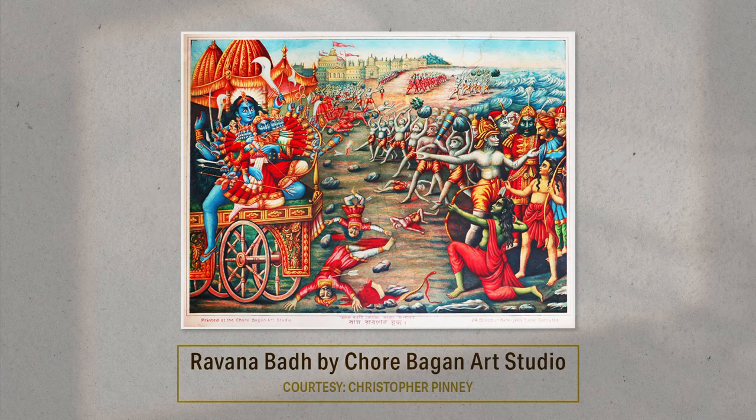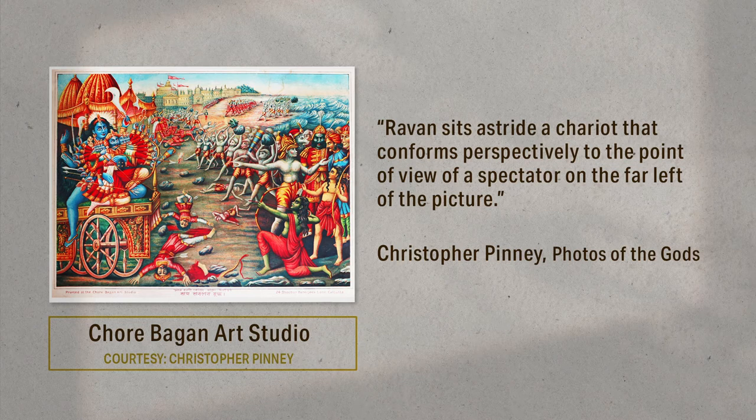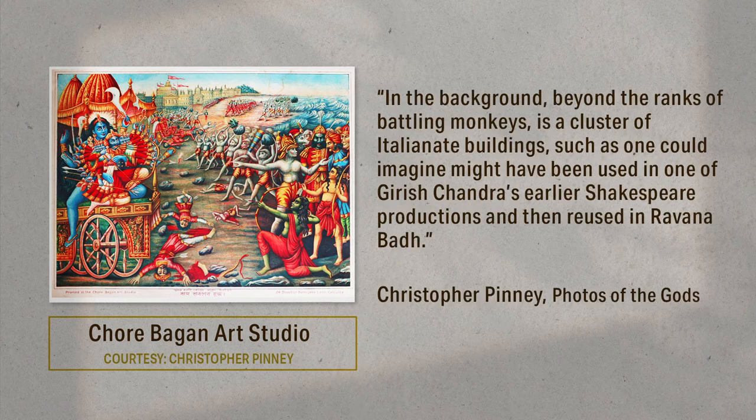The final battle scene between Ram and Ravan formed the climax of the play Ravan Bad. This same scene was depicted in a print by the Chore Bagan Art Studio, another of Calcutta's early printing presses. Look carefully at the visual language of this print — does it not look like we are viewing a scene on stage, seated in the corner of a theatre? The background of the image too looks very much like a backdrop used in a play. Pinney came to the conclusion that the artist of this print had probably attended a performance of the play, and inspired by it, created a chromolithograph around the same theme. Not only the content, but also the style of the painting was influenced by what he may have seen on the stage.